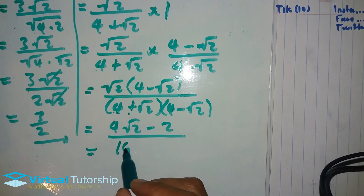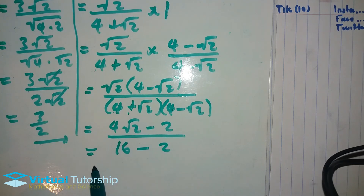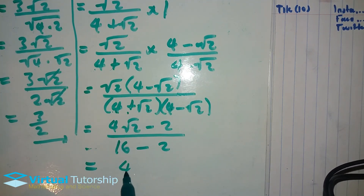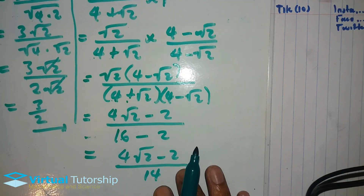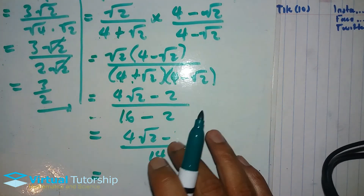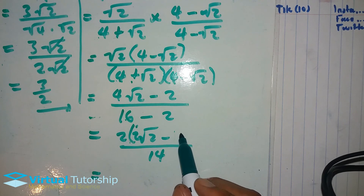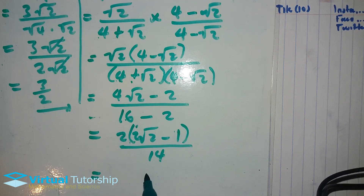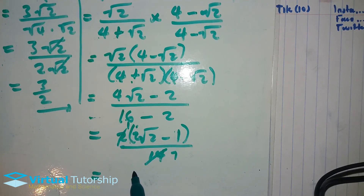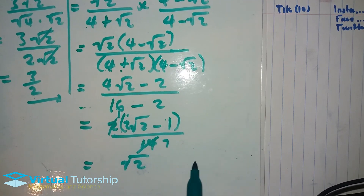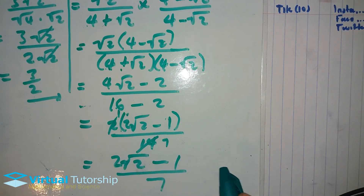So the denominator becomes 4 times 4 minus square root 2 times square root 2, which is 16 minus 2, equals 14. The numerator gives square root 2 times 4 minus square root 2. Then 2 is a common factor, so dividing gives 2 square root 2 minus 1 over 7.